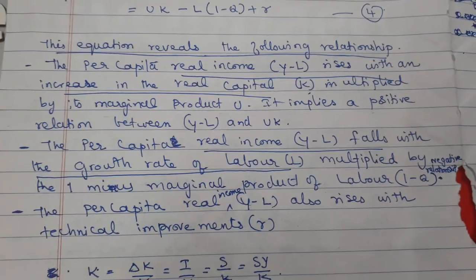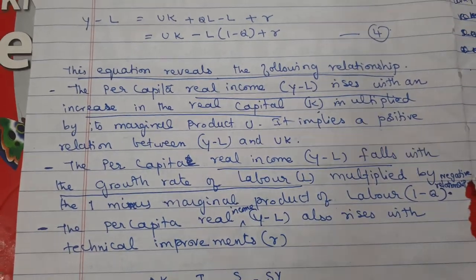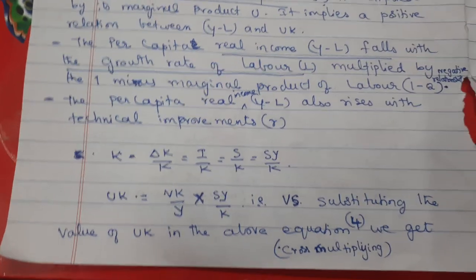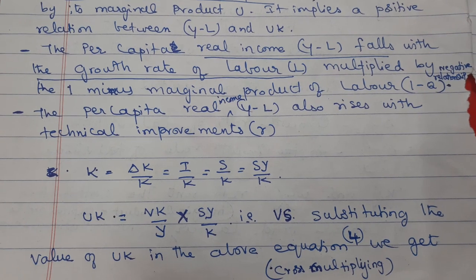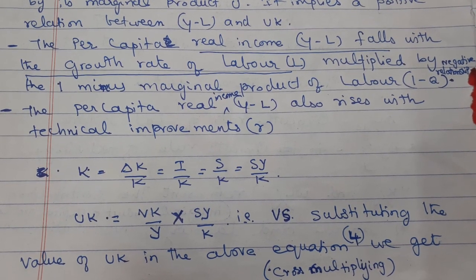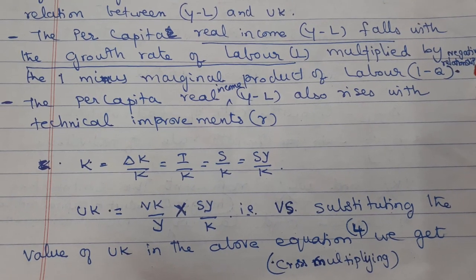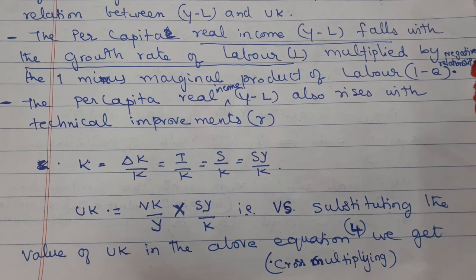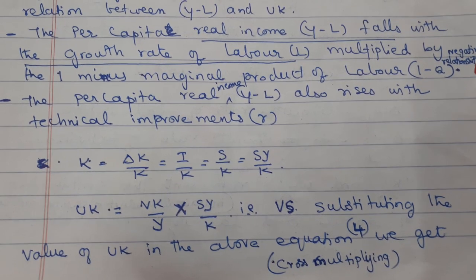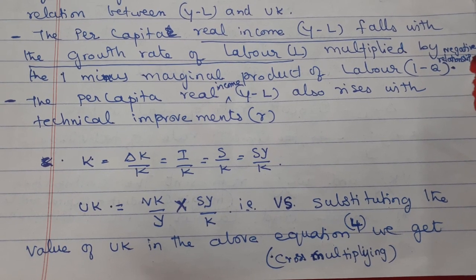Equation 4 reveals the following relationships. Per capita real income (Y − L) rises with an increase in real capital K multiplied by its marginal product U — a positive relationship between Y/L and UK. Per capita real income falls with the growth rate of labour multiplied by (1 − Q), giving a negative relationship between Y/L and labour. Per capita real income also rises with technical improvements R. Furthermore, K can be expressed as ΔK/K = I/K = S/K, substituting into Equation 4 gives: Y − L = VS − L(1 − Q) + R.